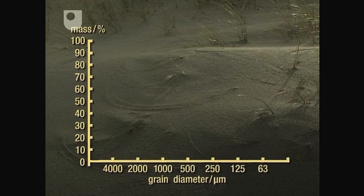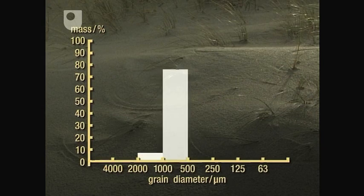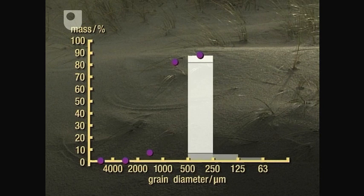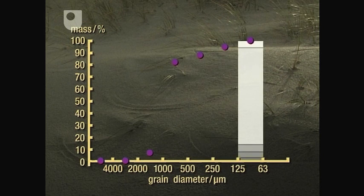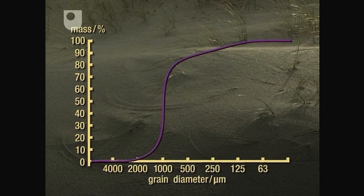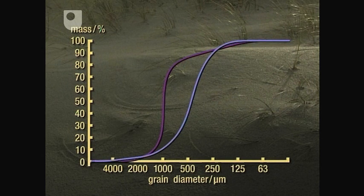You've seen the histogram and the cumulative frequency curve for the beach sand we collected. Let's now look at the histogram and the cumulative frequency curve for the desert sand. With this desert sand, nearly all of the sand grains have been collected in just one sieve. This gives us a very much steeper cumulative frequency curve. And here's the beach sand curve for comparison.